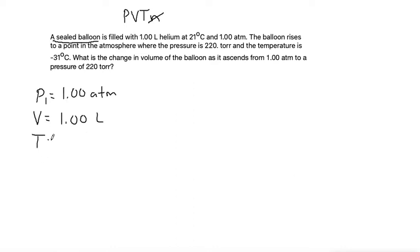Temperature T1 is 21 degrees Celsius, which we'll go ahead and change to Kelvin by adding 273. That makes 294 Kelvin.